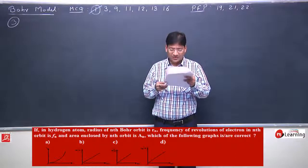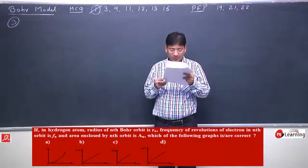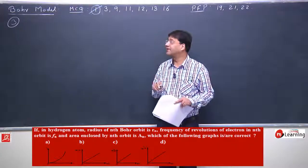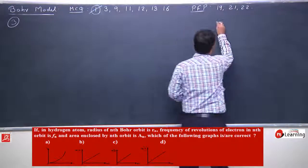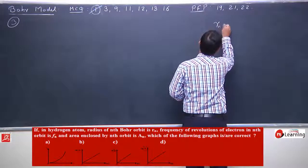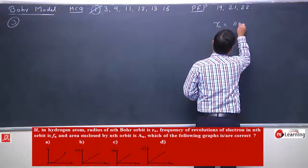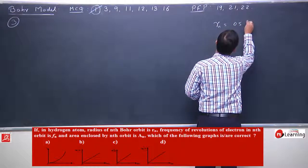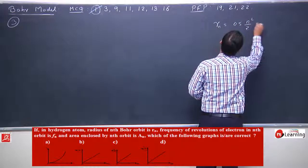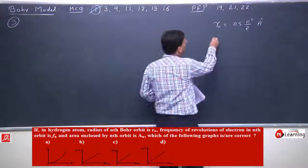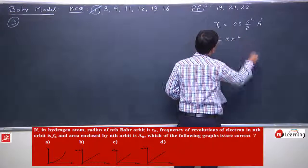Now once again, radius versus n. Radius is given by 0.53 times n squared by z armstrong. So radius of nth orbit is directly proportional to n square.